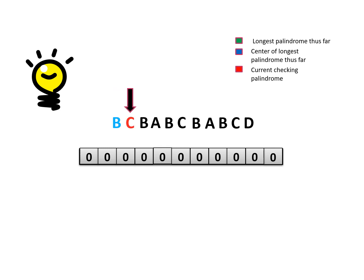Now with C as center, since we have similar characters on either side, we can expand once. We cannot expand further, so we update the value to 1. The two Bs on either side are changed to green, with C marked blue as center, because this is the longest palindrome we have seen thus far.